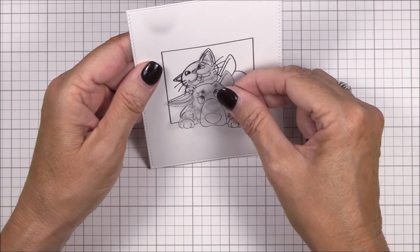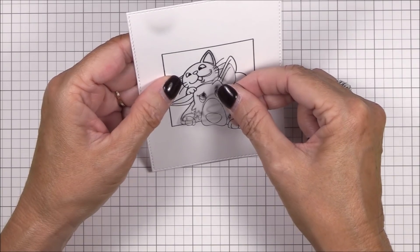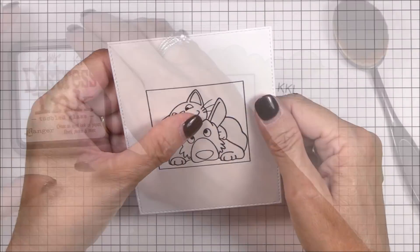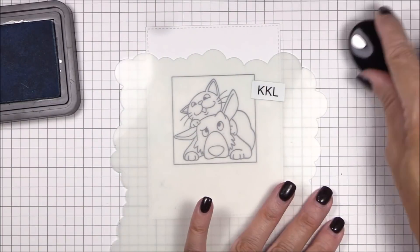I stamped the image onto some masking material and trimmed it out with my scissors. I'll use this to mask off the image on the white panel so that I can ink blend a background.